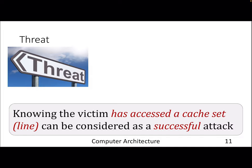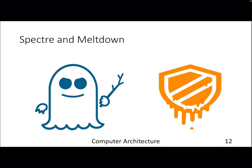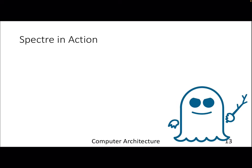The threat model can be simple: if the attacker knows that the victim has accessed a particular cache set, that is already a successful attack. Once you know there is activity on a particular cache set, you can do post-mortem analysis to find out what addresses the victim accessed, since we are dealing with 8-way or 16-way set-associative caches. With that, let's jump to two interesting attacks — Spectre and Meltdown — which use cache as a timing channel but exploit speculative execution and out-of-order execution.